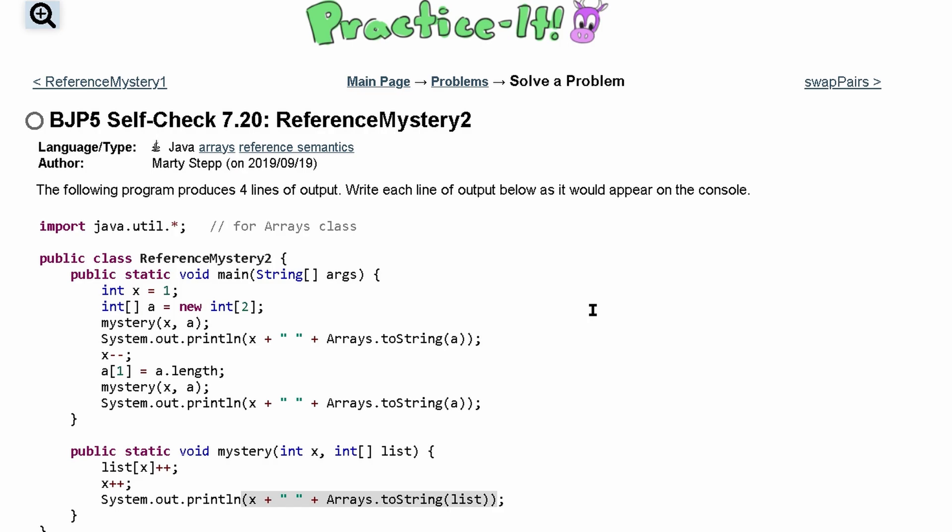So we know that when we initialize an array and declare it with a size, everything inside is filled with zeros. So we just have zeros inside of here. Looks like we increment this based off of x as our index.